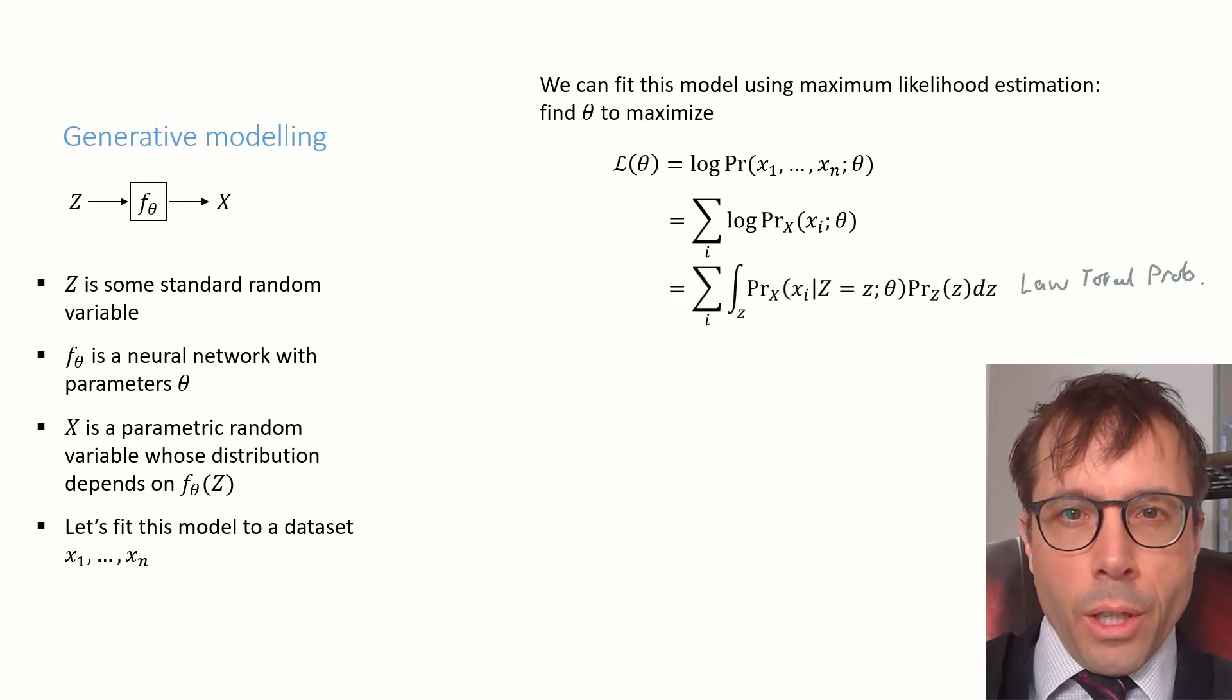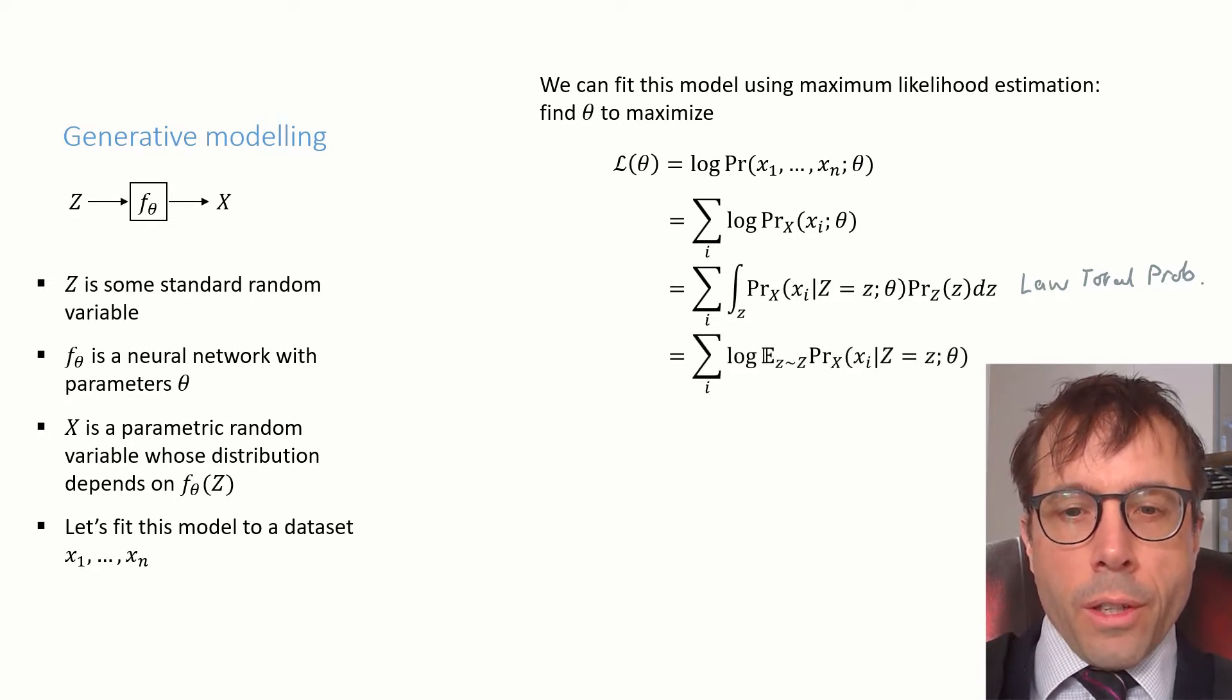It's a latent variable model. In other words, X is generated randomly from Z. So to work out the likelihood of X, we can condition on Z using the law of total probability. The next step is just another way to write the integral. I find it much more intuitive to work with expectations rather than integrals. So that's what I've written here. It's an integral, i.e. an expectation over Z. And the thing we're integrating is the likelihood of Xᵢ conditional on Z.